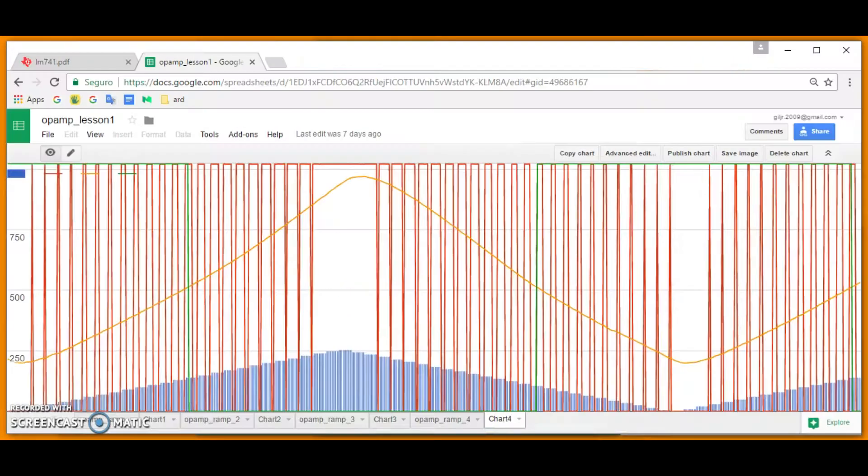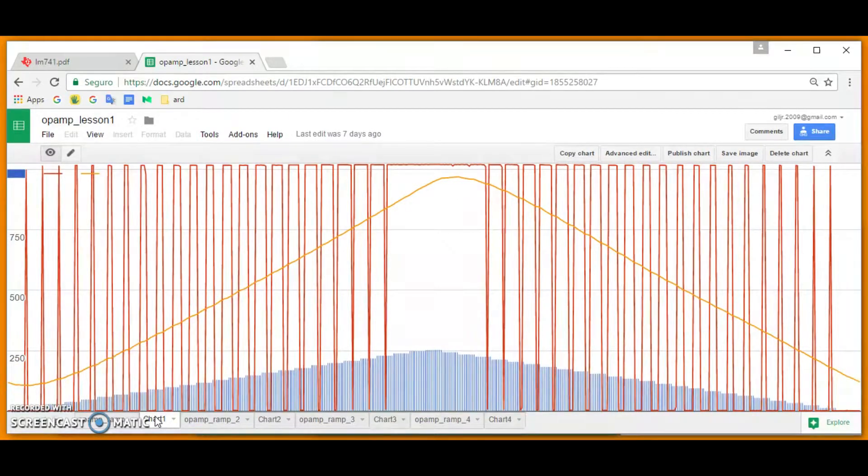We prepared a set of graphs. Graph 1, op-amp 1, clearly shows as the signal is attenuated by the low-pass filter. Notice visually the voltage differences.